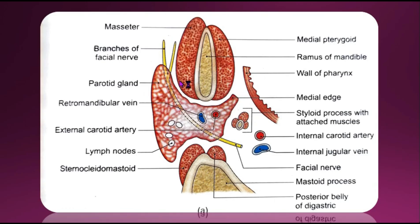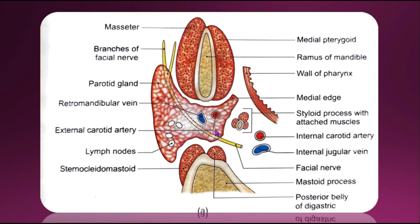The anteromedial surface is between the anterior and medial borders, grooved by the posterior border of the ramus of the mandible. It is related to the masseter muscle, the lateral surface of the temporomandibular joint, the posterior border of the ramus of the mandible, and the emerging branches of the facial nerve. The posteromedial surface is related to the mastoid process, the styloid process, and the structures attached to them. The external carotid artery and the facial nerve enter the gland through this surface.